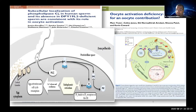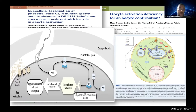In normal fertilization, phospholipase C-zeta of the fertilizing spermatozoid produces inositol triphosphate within the oocyte, which interacts with receptors in the endoplasmic reticulum, causing calcium oscillation to trigger oocyte activation. The oocyte also contributes via beta and other unidentified factors, with the precise mechanism remaining not fully understood.